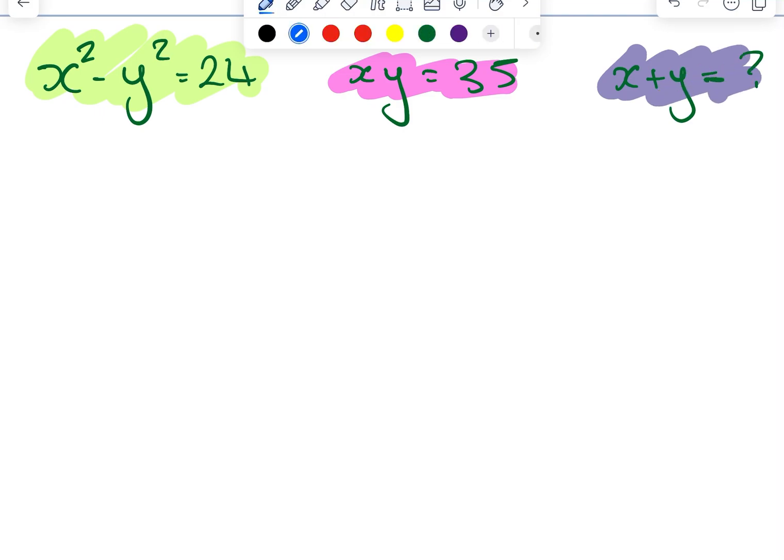Now the fantastic thing about this solution and this problem is we can do it without even finding what x is and what y is. We're going to do it without finding the individual variables. So you're probably used to some kind of simultaneous equations like this and the way we do this we might do something called elimination.